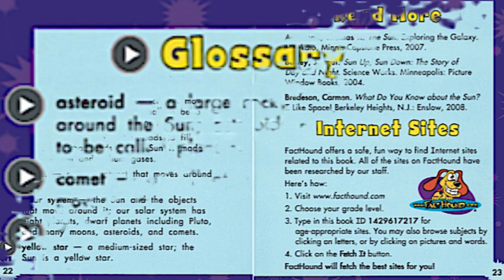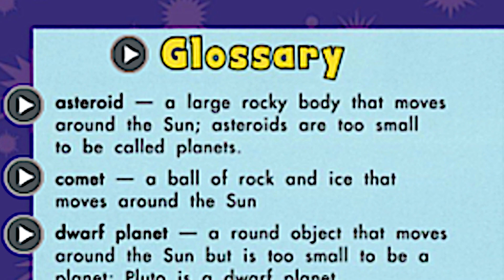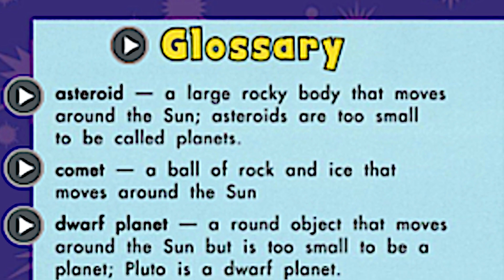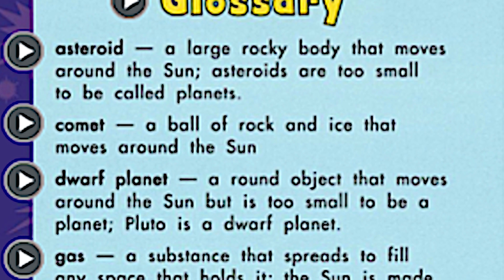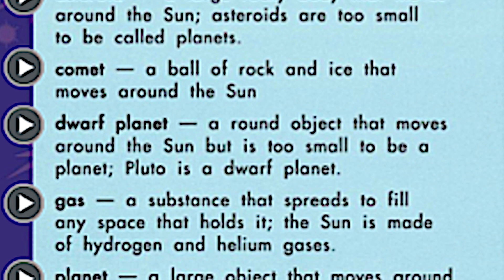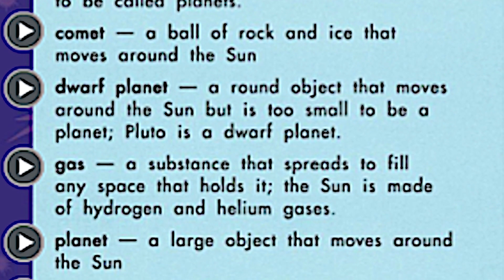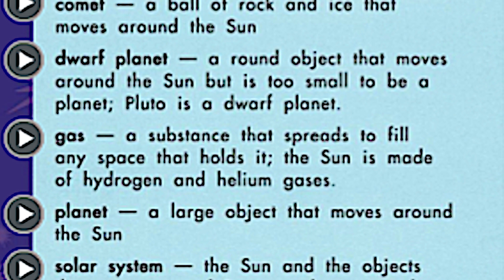If you take a look at the word asteroid, it says a large rocky body that moves around the sun. Asteroids are too small to be called planets. The next word is comet: a ball of rock and ice that moves around the sun. The third one is dwarf planet — a round object that moves around the sun, but is too small to be a planet. Pluto is a dwarf planet. The next word is gas: a substance that spreads to fill any space that holds it. The sun is made of hydrogen and helium gases.